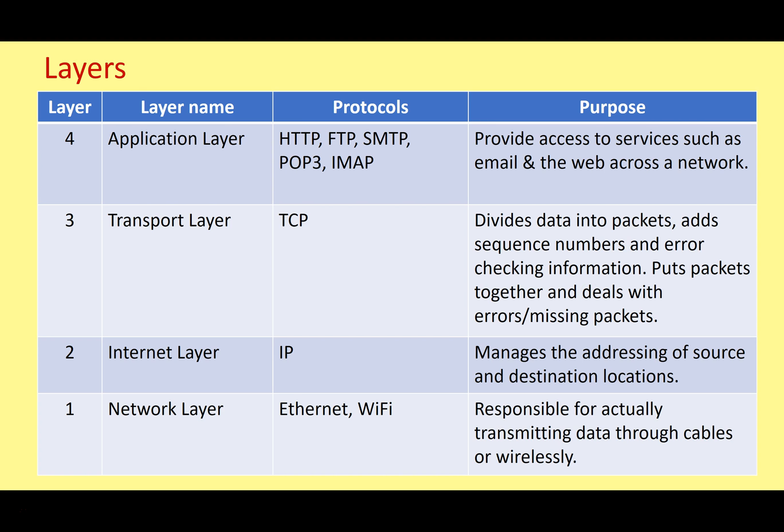A network layer is really just a division of network functionality. It covers a particular section of how network communication takes place, and it works together with the other layers to make sure the whole task is done. This table takes us through what we often refer to as the four-layer network model, or the TCP/IP network model, which is essentially how networking works across the internet.